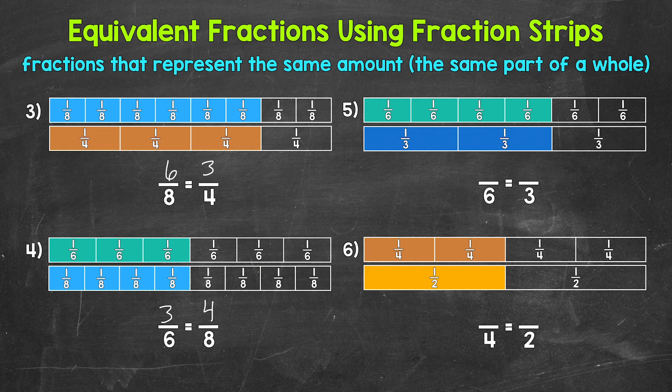Moving on to number five: the top fraction strip has six equal parts and four are shaded, so it's showing four sixths. That's going to be equivalent to how many thirds? The bottom fraction strip has three equal parts and two are shaded, so that's two thirds. Both fraction strips are showing the same amount, the same part of the whole rectangle — so four sixths and two thirds are equivalent.